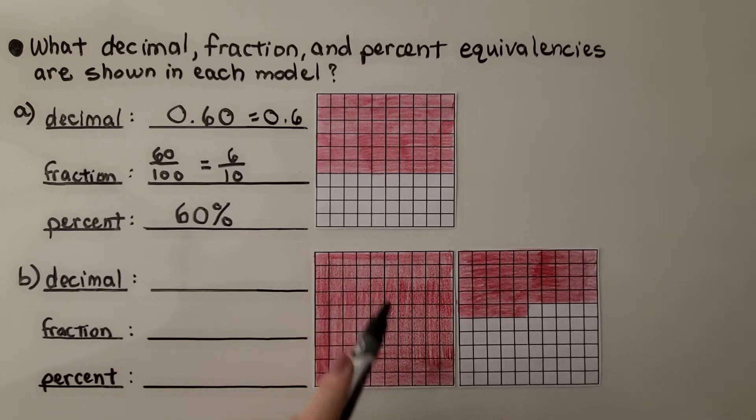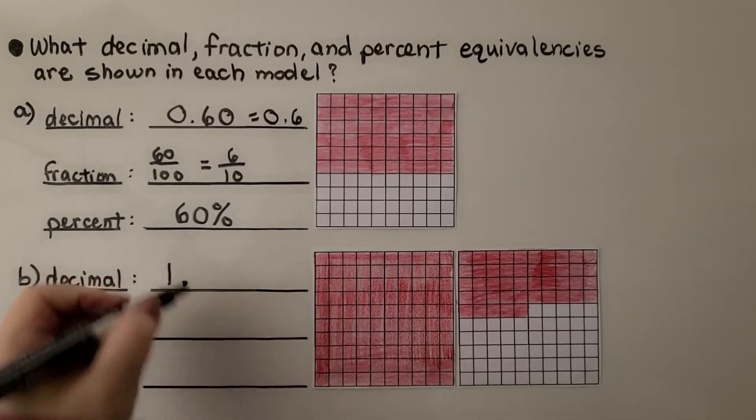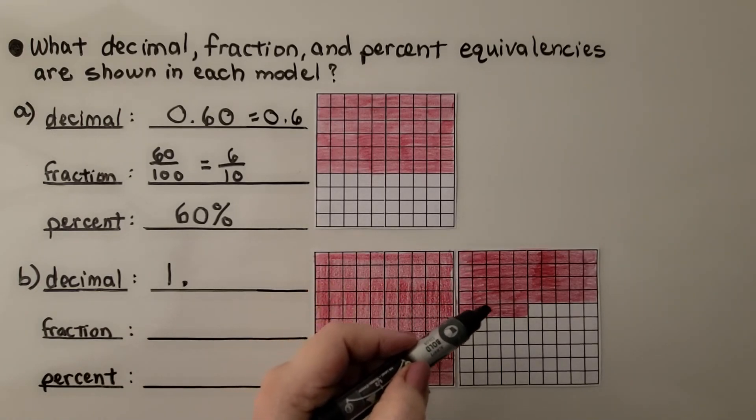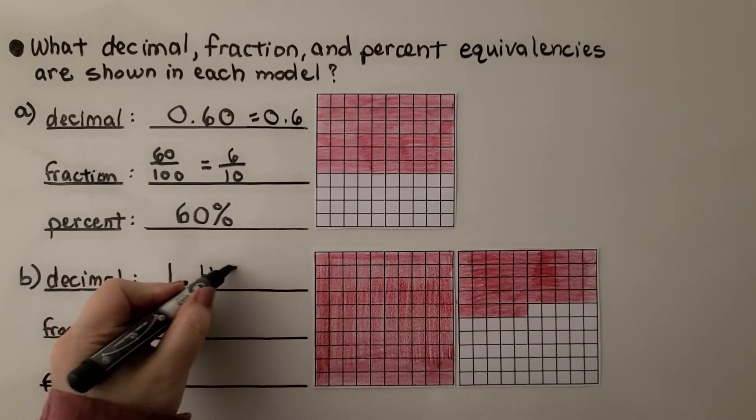Now here, we've got one whole and we've got 10, 20, 30, 40, 41, 42, 43, 44, 45. We have 1 and 45 hundredths.